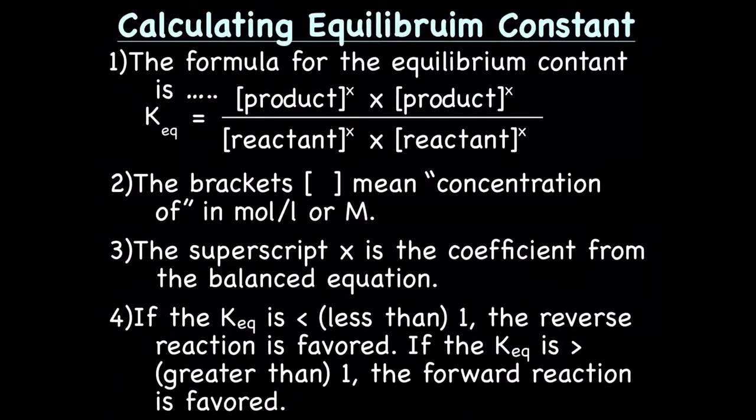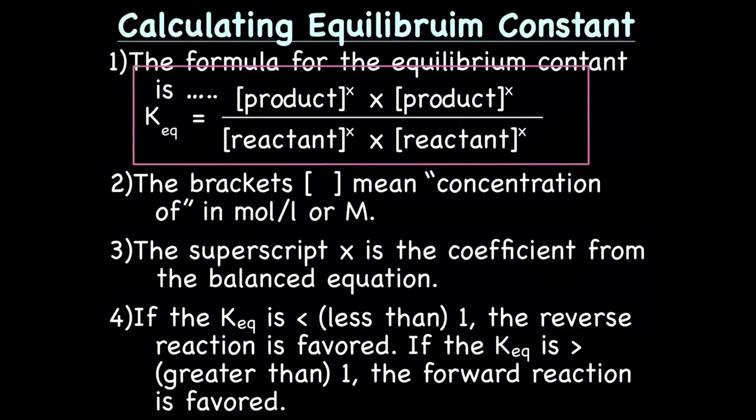Let's learn how to calculate the equilibrium constant. The formula for the equilibrium constant is KEQ equals square bracket product to the X times square bracket product to the X divided by square bracket reactant to the X times square bracket reactant to the X. The brackets mean concentration of. So it would be KEQ equals the concentration of product to the X times concentration product to the X divided by concentration reactant to the X times concentration reactant to the X.